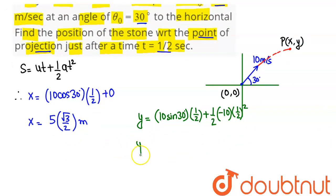So this simplifies as y equals 5 into sin 30, which is 1 upon 2, minus 5 upon 4. Taking lcm, 10 minus 5 becomes 5 upon 4 meter.